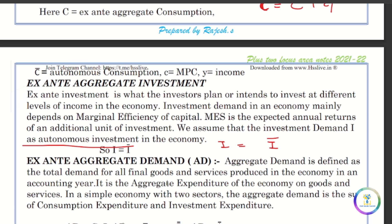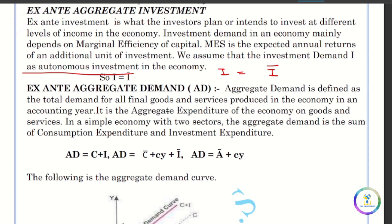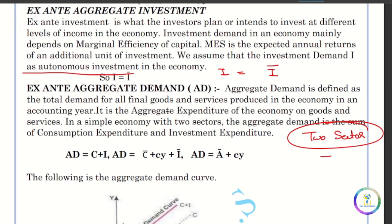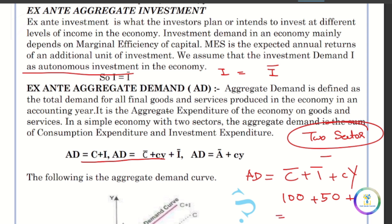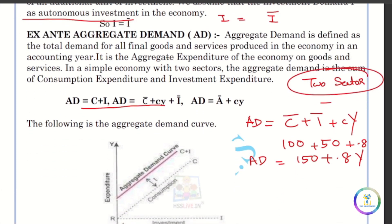Next is aggregate demand. We assume a two-sector economy with firms and households. Consumption and investment are the components. The equation of aggregate demand is: AD equals C-bar plus I-bar plus cY. For example, if C-bar is 100, I-bar is 80, and c is 0.8, then AD equals 180 plus 0.8Y.